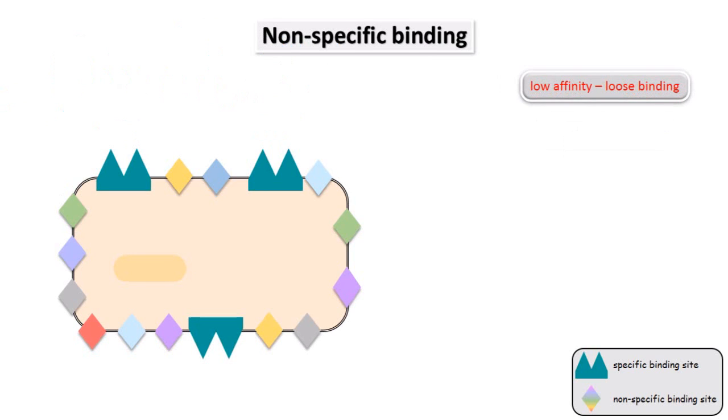So now let's look at other binding sites that ligands can interact with. Non-specific binding is low affinity. The ligand only binds loosely. But, because they are low affinity, there are lots of these sites available.